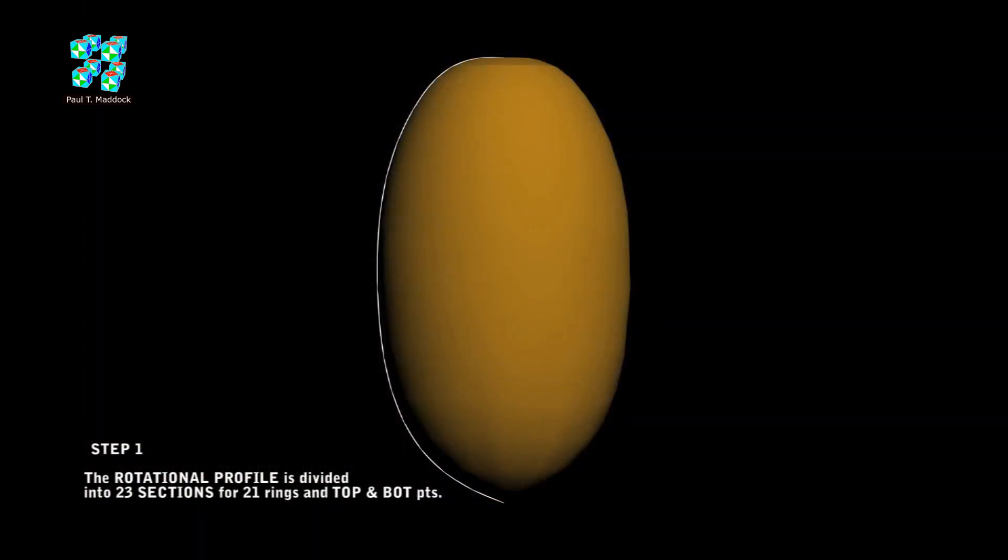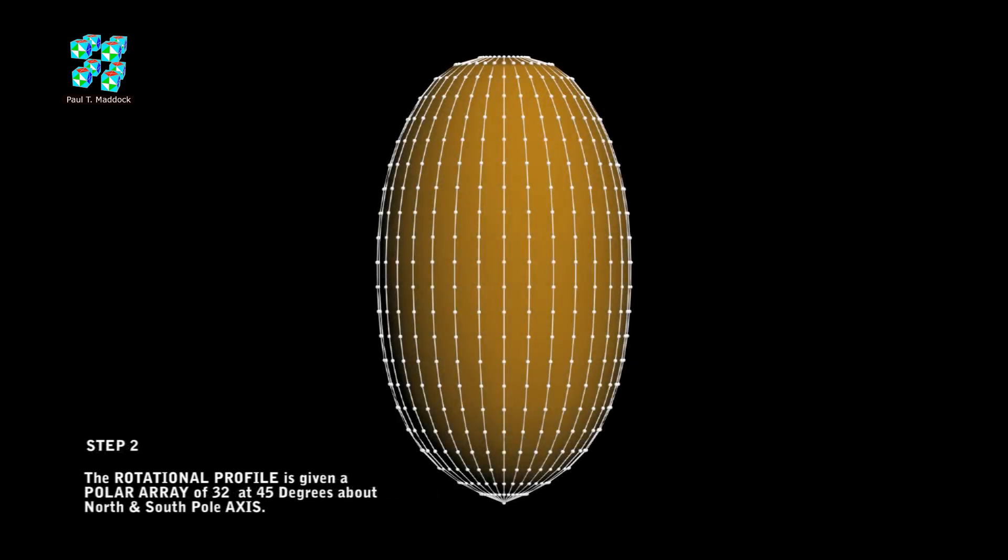So now I've made a 3D model of the shape. And now we just need the rotational profile. Next job is to divide the profile into 23 segments. I say 23 because there's a dot on either end. Now after a bit of research, I realize I need a polar array of 32.